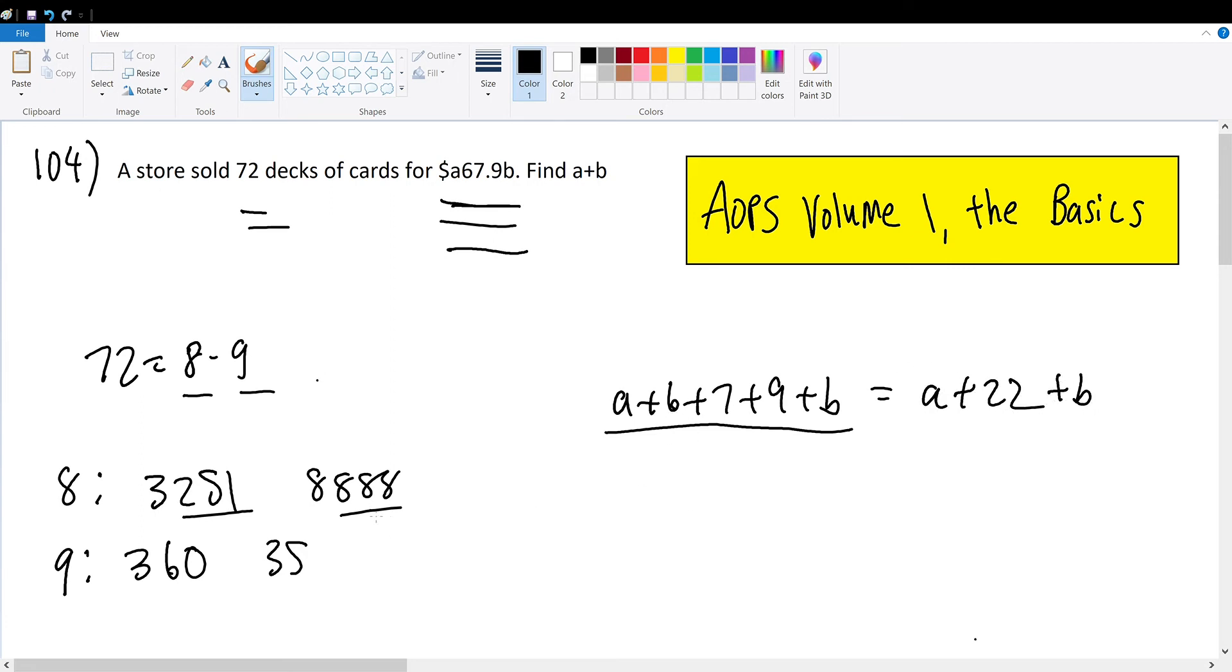Now we can consider the divisibility rule for 8. That is, 79B must be a quantity divisible by 8. But remember, B can only be a single digit, so B can only be 0 through 9.